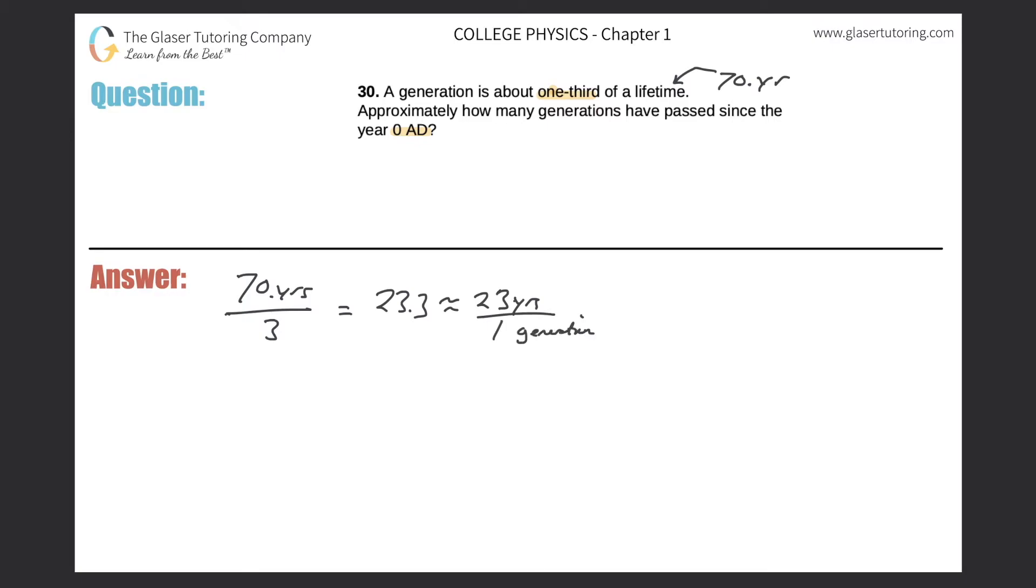Okay. Now what it says is it wants us to answer the question of approximately how many generations have passed since the year 0 AD. So as I'm currently recording this video, we are in the year 2020. So the year 2020, right? 2020 minus 0 AD is obviously 2020. So in other words, 2020 years have elapsed.